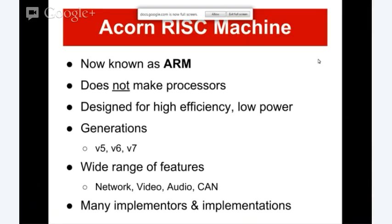There is a wide range of features you can find on all the different ARM boards out there. If you're going to play with one, the Raspberry Pi is a great place to start because it is cheap, it is approachable, and it is not a little black box you'll never figure out. Key things on the Raspberry Pi: you have network, video, audio, and while it does not have CAN, you can use that set of pins on the side for GPIO, SPI, and I2C to connect additional peripherals.